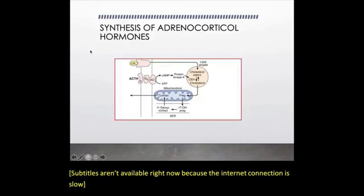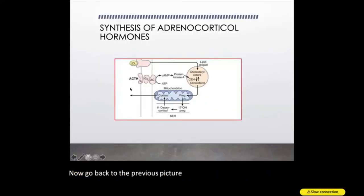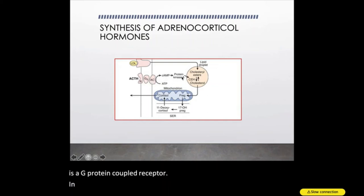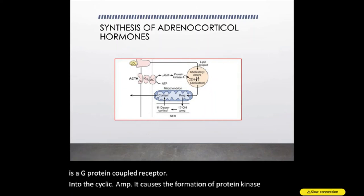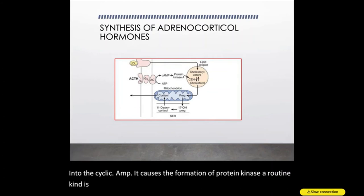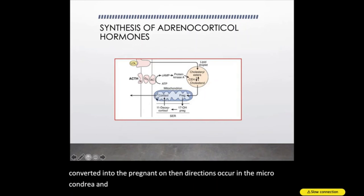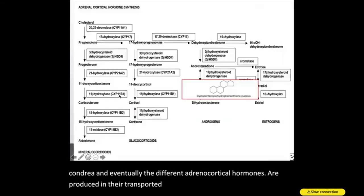Going back to the previous picture: ACTH has a receptor on the cell membrane which is a G-protein coupled receptor, and through cyclic AMP it causes the formation of protein kinase A. Protein kinase A converts cholesterol into pregnenolone, then the reactions occur in the mitochondria and eventually the different adrenocortical hormones are produced and transported into the bloodstream.